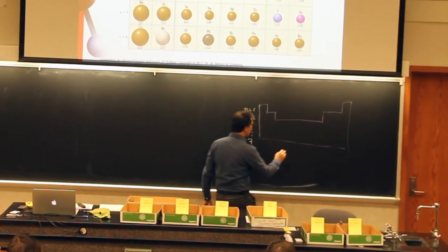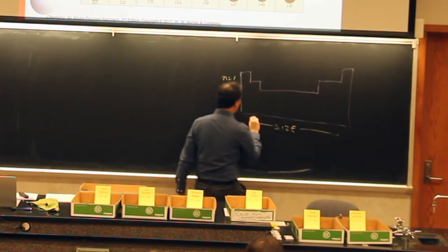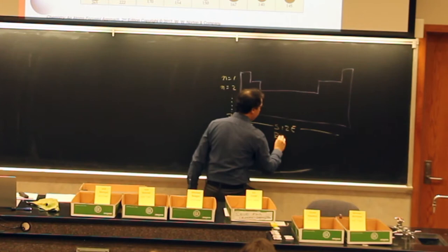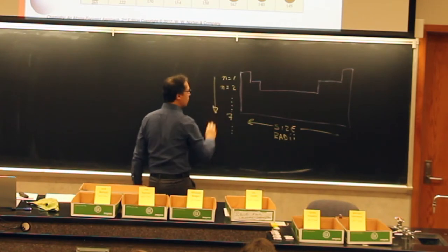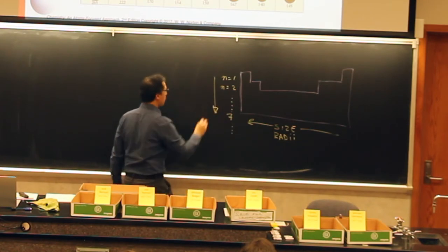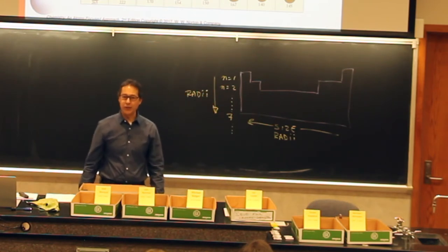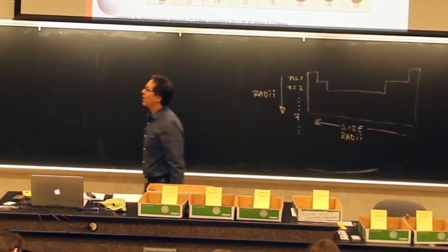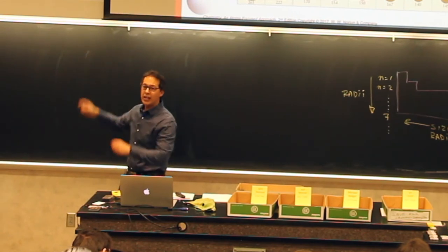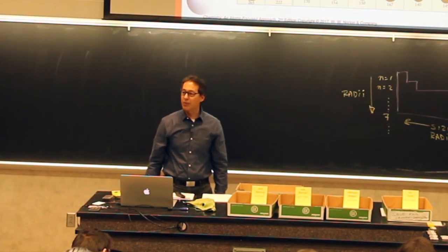So on your periodic table, I'd write: size — or radii — gets bigger as you go this way down and also gets bigger as you go this way to the left. Radii is just plural for radius. Now, the biggest, fattest element on the periodic table — if you look at an actual periodic table with all the elements — which element should be the biggest? Francium.